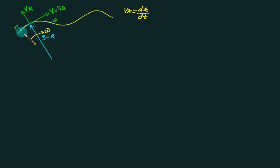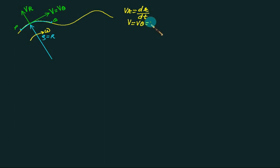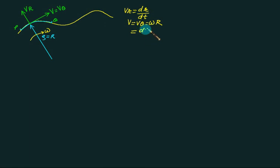If the particle is making an angular motion equal to omega, then v_theta is simply written as omega multiplied by r. That is a familiar formula. Omega is nothing but the rate of change of angular displacement with respect to time.